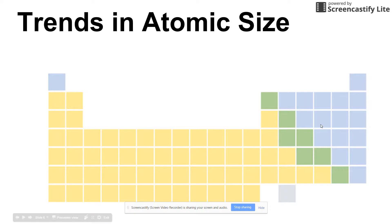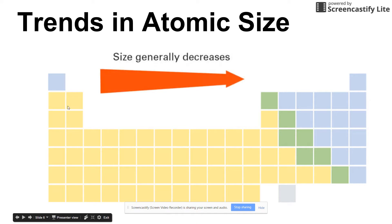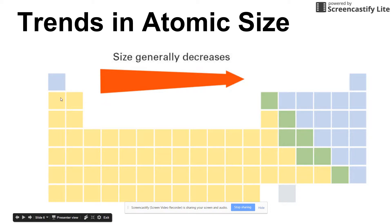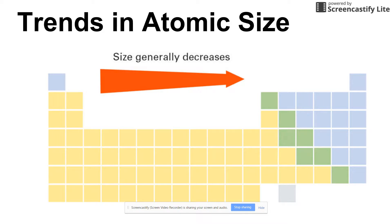Looking at the periodic table and the logic: as you move across a period from left to right, atomic size is generally decreasing. The reason is that each element has one more proton than the previous one. As you add more and more protons to the nucleus, it becomes more and more positively charged, and the outermost electron is attracted more strongly to that increasing positive charge, so it's pulled in — creating a smaller atomic radius.